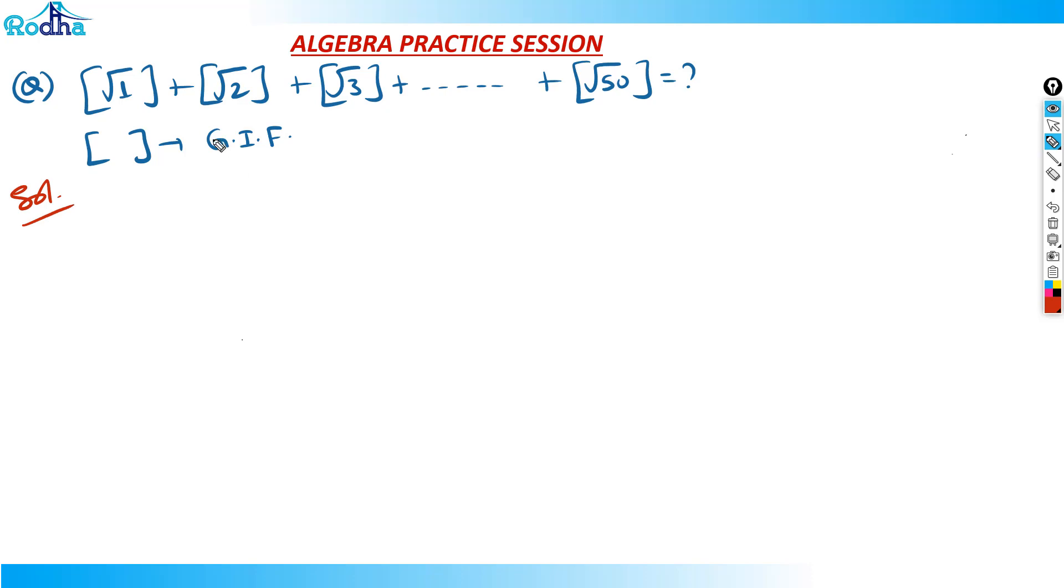So now if I try to solve this, √1, √2, √3 till √50. What is the value? √1 value will be 1 only. √2 will be 1.414 to be exact, but I'm just fine with 1 point something. 1 point something means its value will be 1 only, its integer value. √3 is again 1.73 to be exact. 1 point something means 1 only. So 1 will come 3 times.